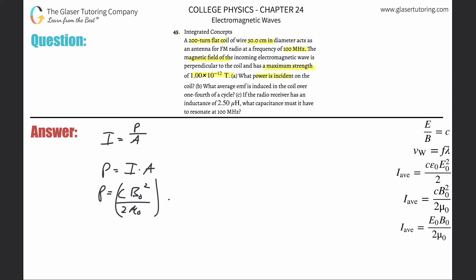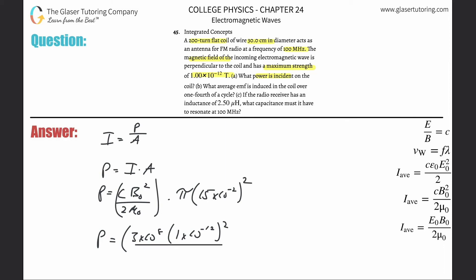Then multiply by the cross-sectional area. They told us the diameter — it's circular — so that's pi r squared. The radius is half the diameter, so that's 15 centimeters, which is 15×10⁻² meters. So plugging everything in: power equals the speed of light, 3×10⁸, multiplied by the magnetic field, 1×10⁻¹², squared, divided by 2 times the permeability of free space, 4π×10⁻⁷, then multiplied by π times (15×10⁻²)².